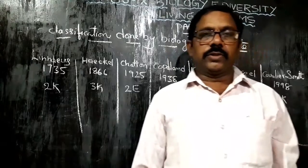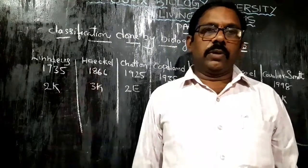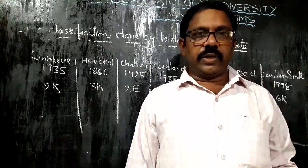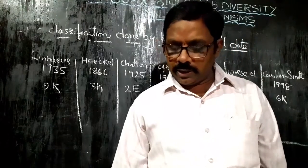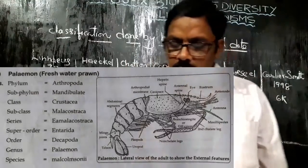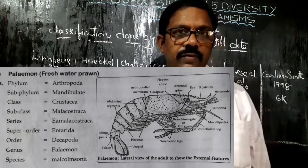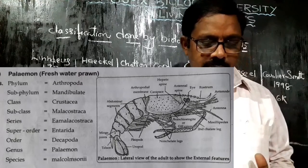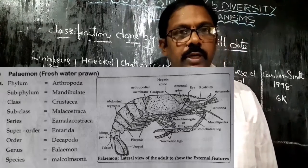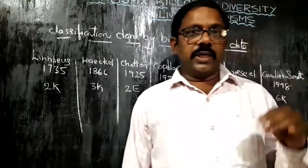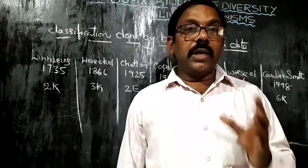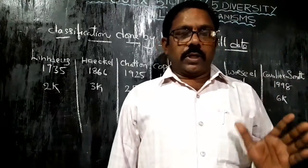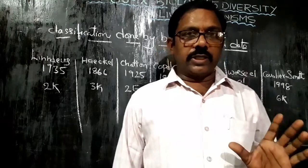Dear students, we are discussing Unit Number Five: Diversity in Living Things. This is a very important topic. We already completed the need of classification. The meaning of classification is the arrangement of plants and animals according to their similarities.